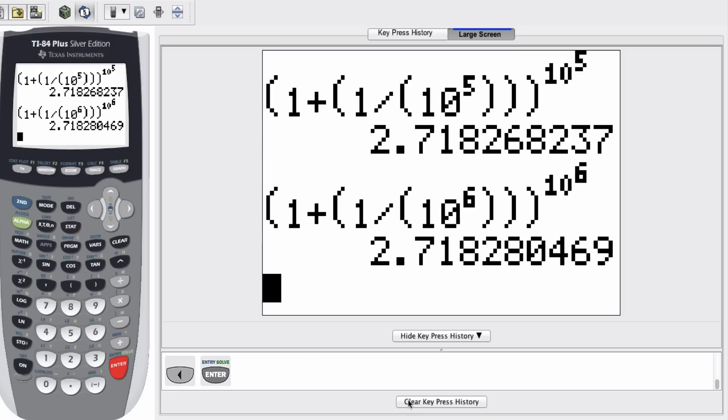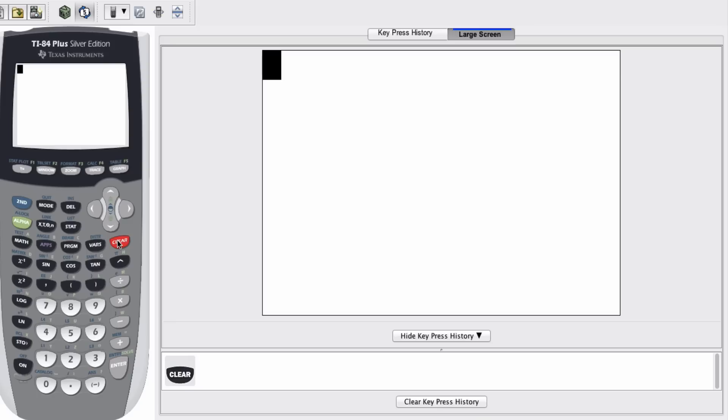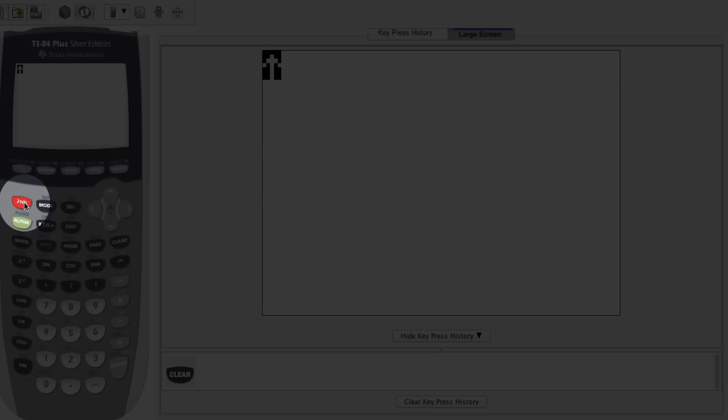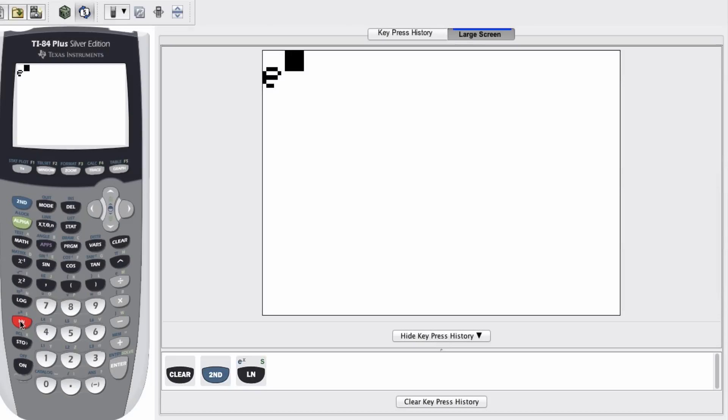And so what I'm going to do right now, I'm going to show you how to find the button E to the X on your calculator. So I'm just going to clear everything out. And if you press the second button, and then our LN, and LN stands for natural logarithm, and we will get into that more later this chapter. But second LN gives me this E to the X.